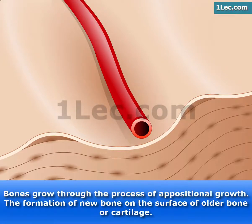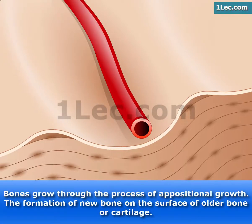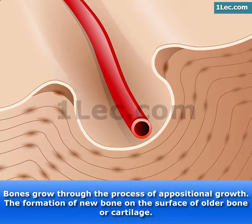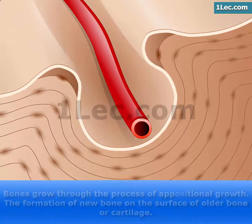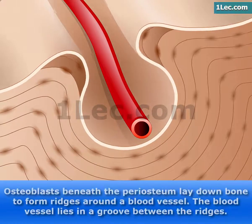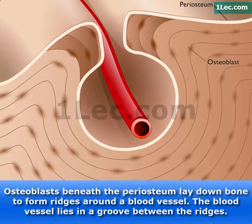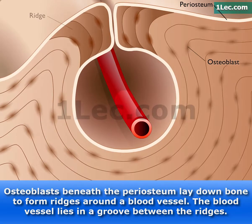Bones grow through the process of appositional growth, the formation of new bone on the surface of older bone or cartilage. Osteoblasts beneath the periosteum lay down bone to form ridges around a blood vessel. The blood vessel lies in a groove between the ridges.